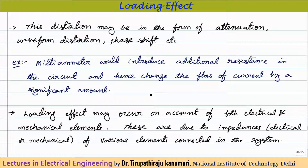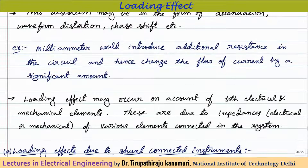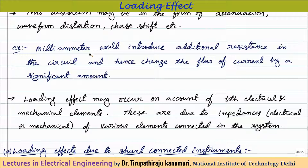As an example, consider a system where the current passing is very small. If I want to measure it using an ammeter — say a milli-ammeter connected in the circuit — every instrument you connect has some resistance. That resistance will immediately affect the current passing in the circuit. The milli-ammeter introduces additional resistance and hence changes the flow of current by a significant amount.